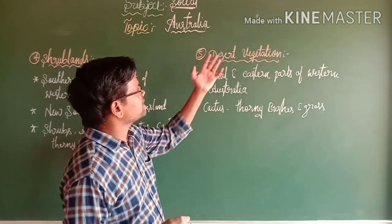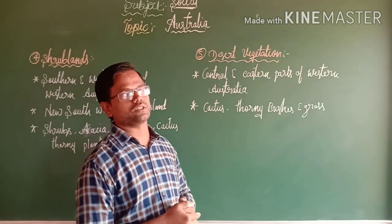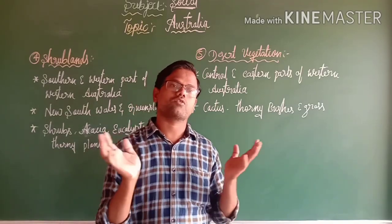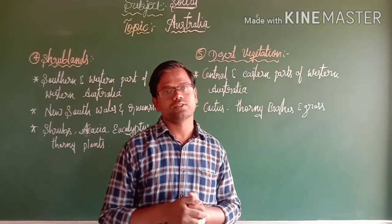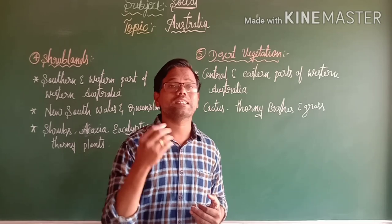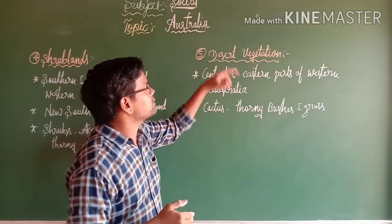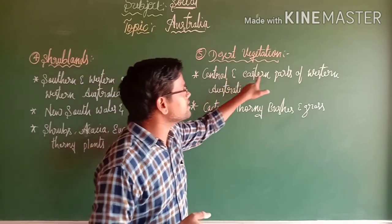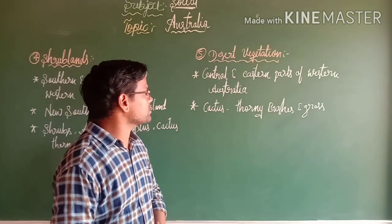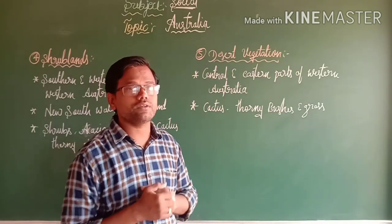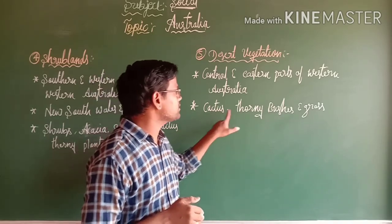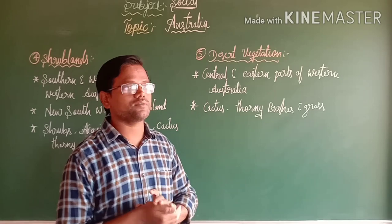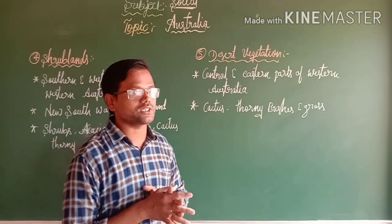The fifth natural vegetation is desert vegetation. Australia is almost entirely occupied by desert area, with very less rainfall. This desert vegetation is mainly found in the central and eastern part of Western Australia, where the important plants are cactus, thorny bushes, and grass.